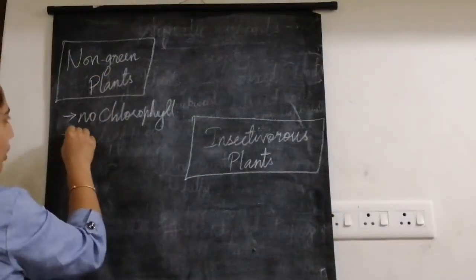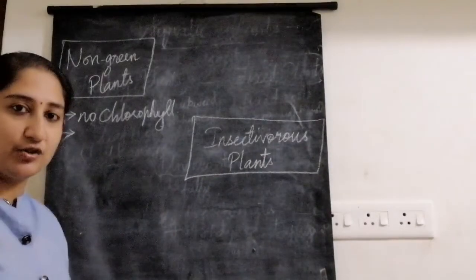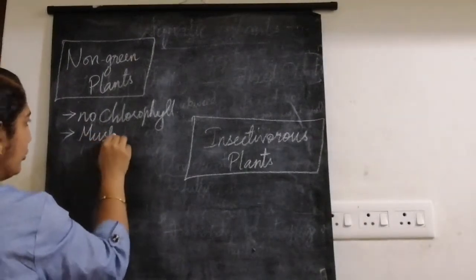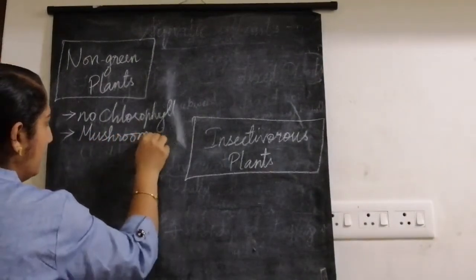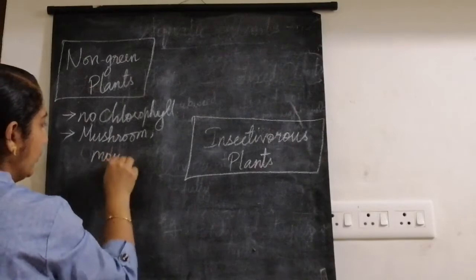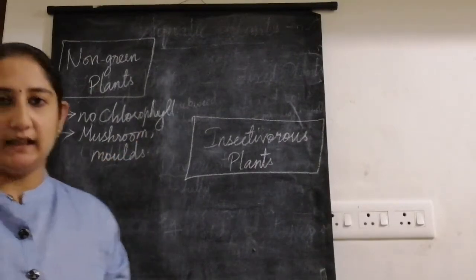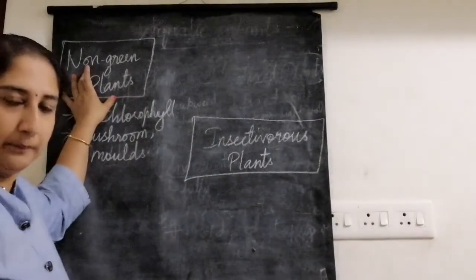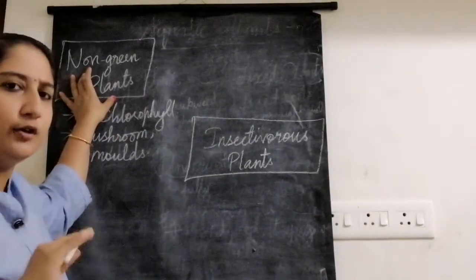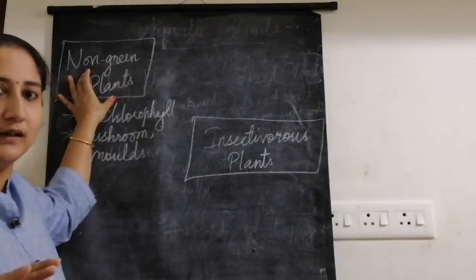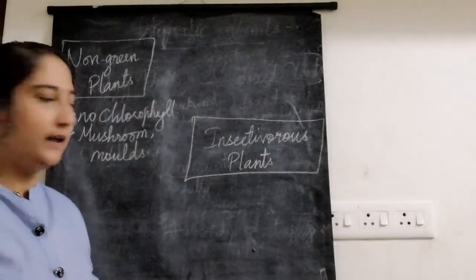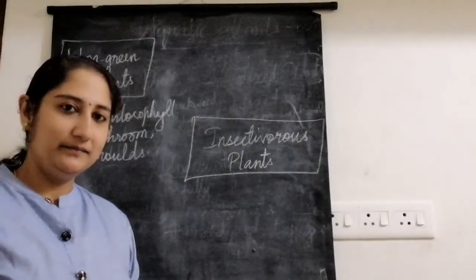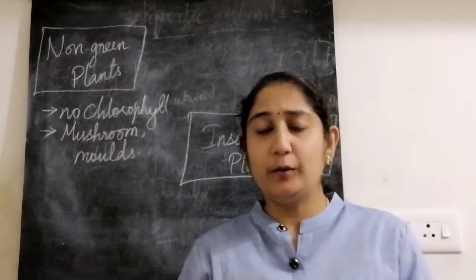The examples of non-green plants are mushroom and mold. Two things to remember: no chlorophyll, they don't prepare their own food, they depend on others. Examples are mushroom and mold.